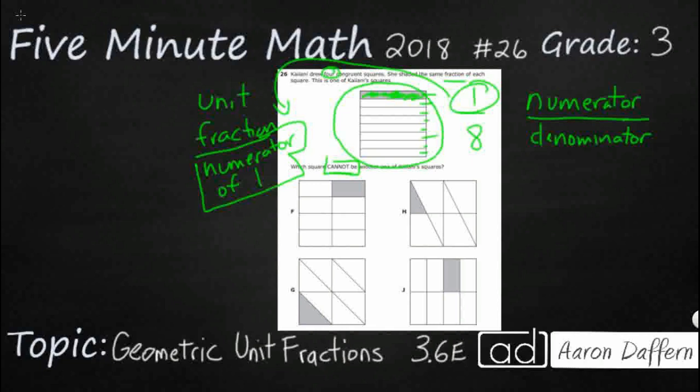Let's see. Look at F. So let's count the numerator. So my numerator is going to be one because it's got one shaded piece right here. How many total pieces? One, two, three, four, five, six, seven, eight.